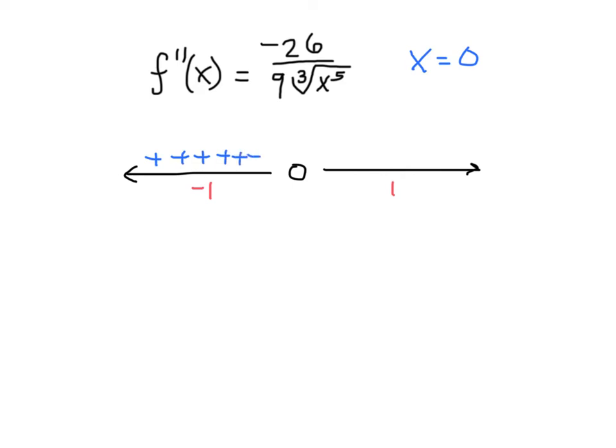When the second derivative is positive, our function's concave up, meaning it's curving with this shape, kind of like a smiley face. And that interval will be written as negative infinity to zero.